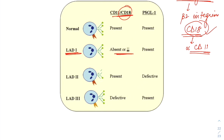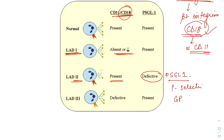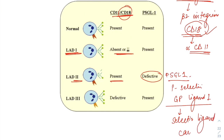In LAD type 2, CD18 is present but the defect is in PSGL-1 — P-selectin glycoprotein ligand 1 — which is the selectin ligand, a glycoprotein carbohydrate. This defect in PSGL-1 is responsible for LAD type 2.